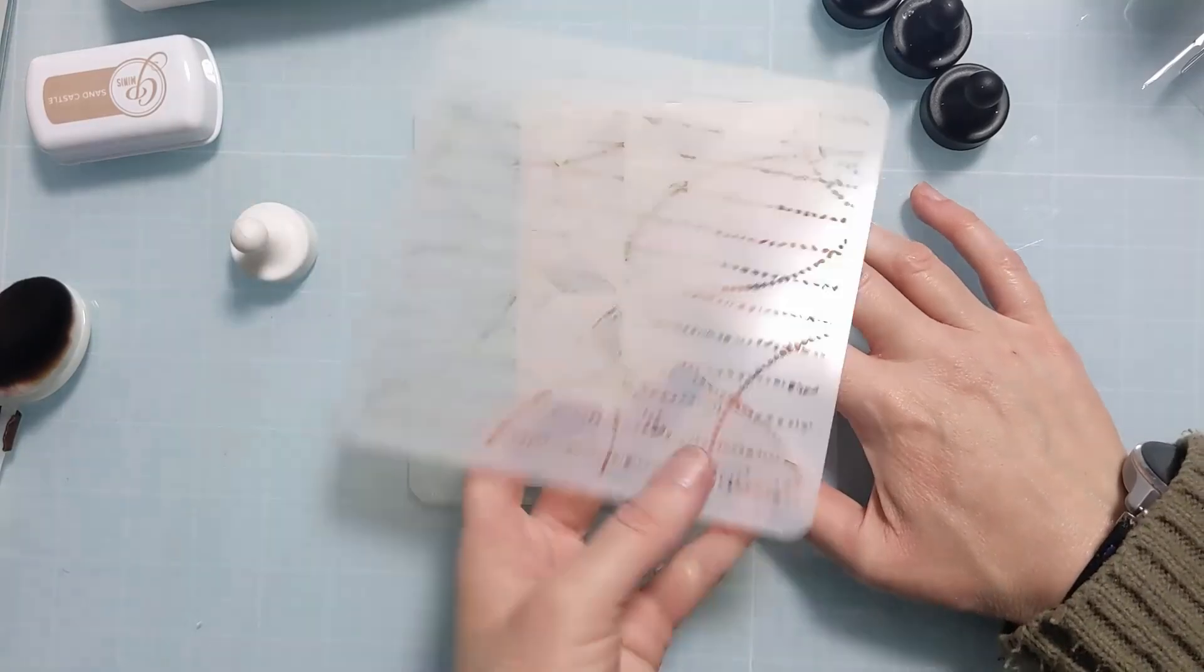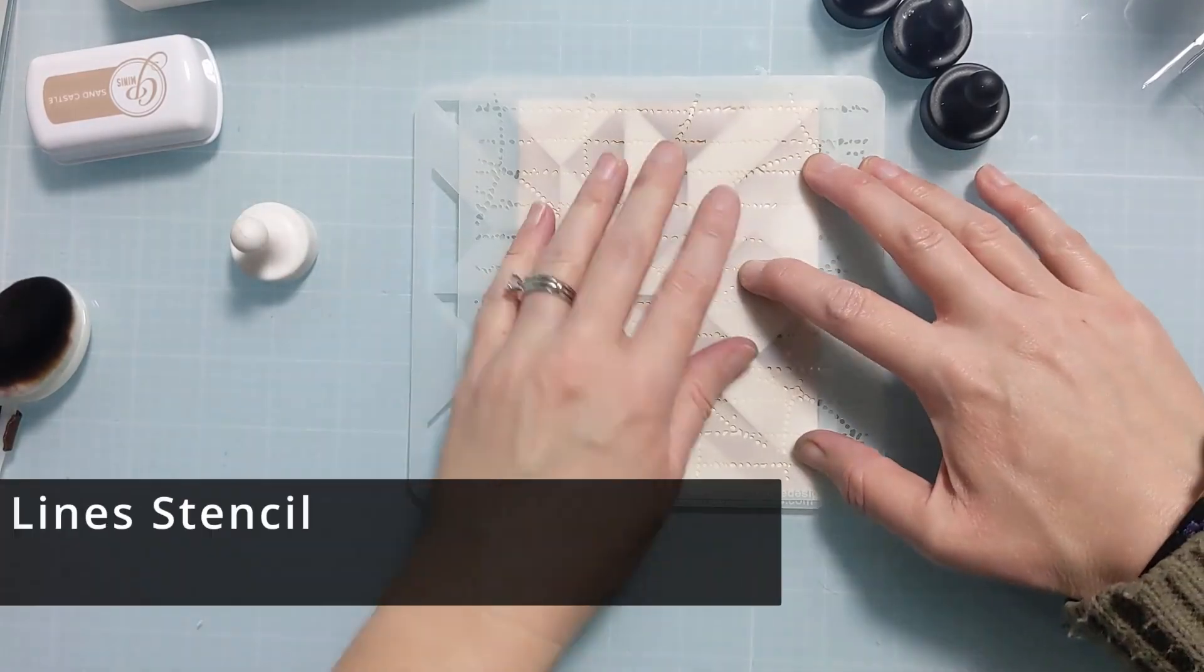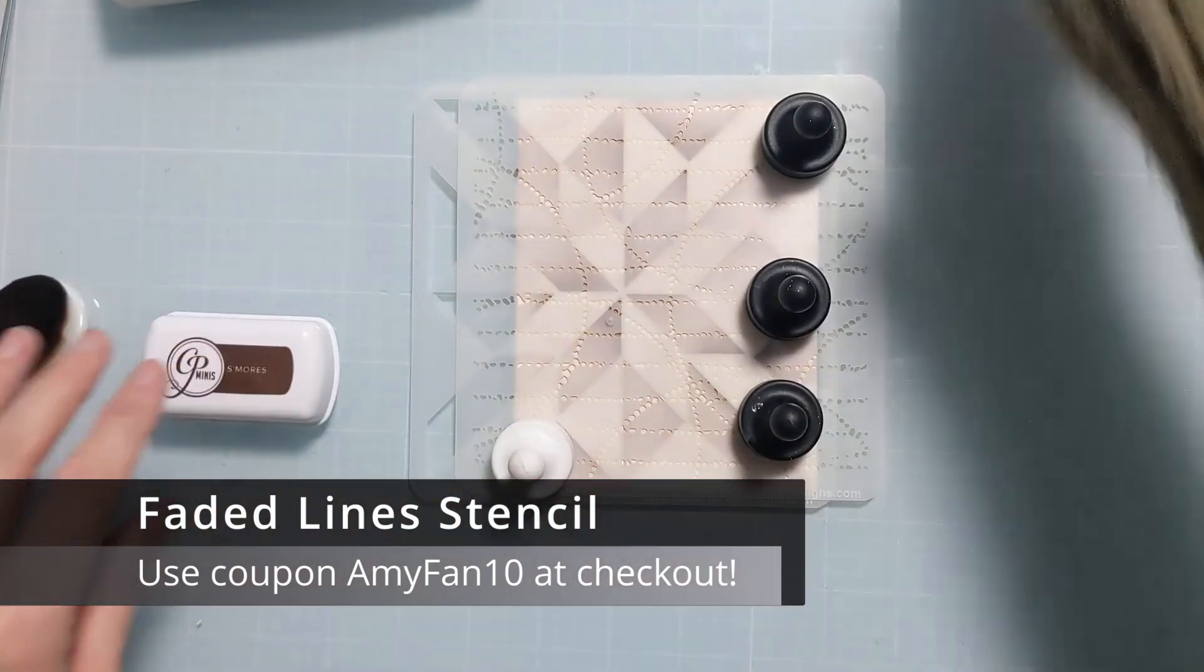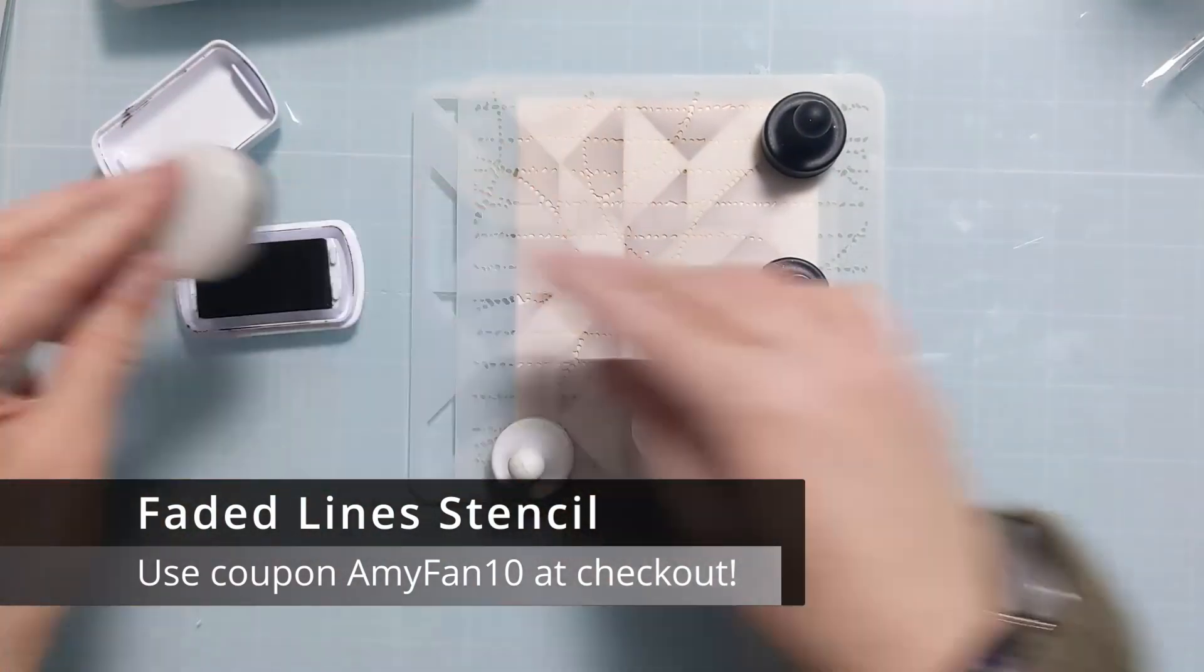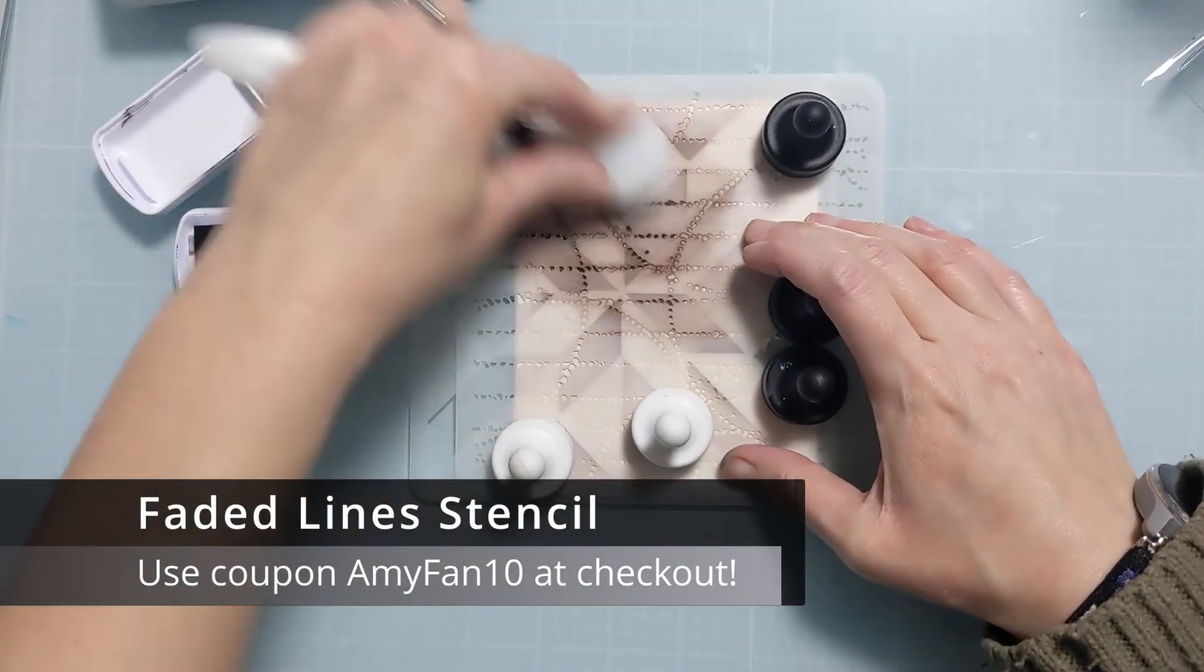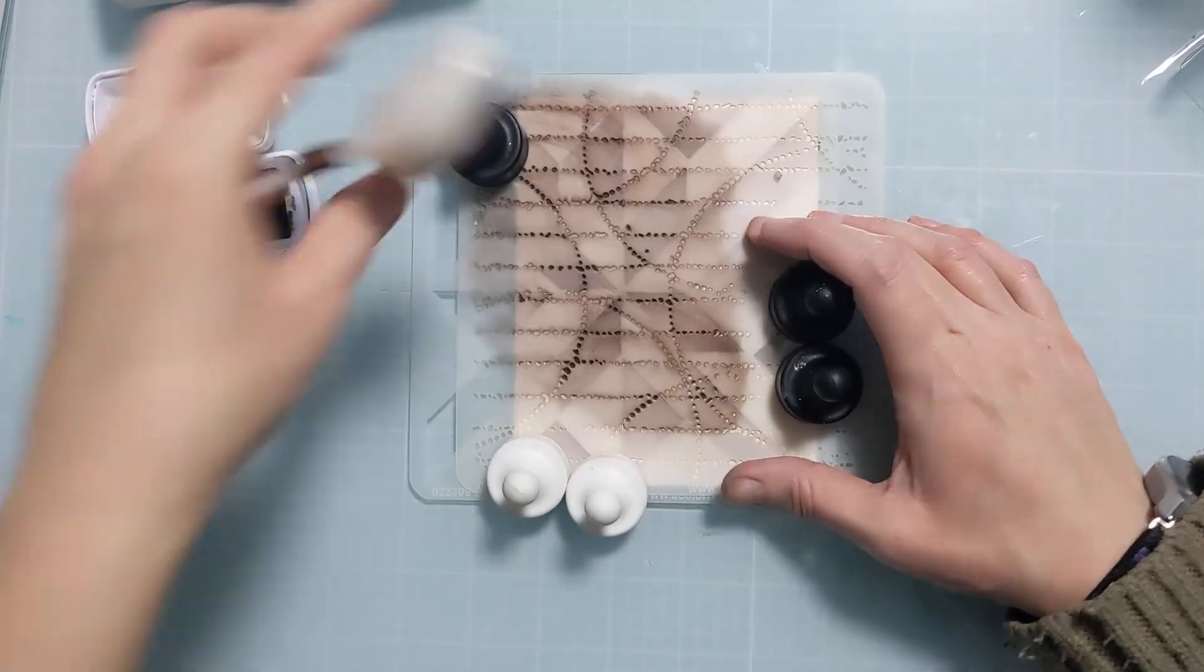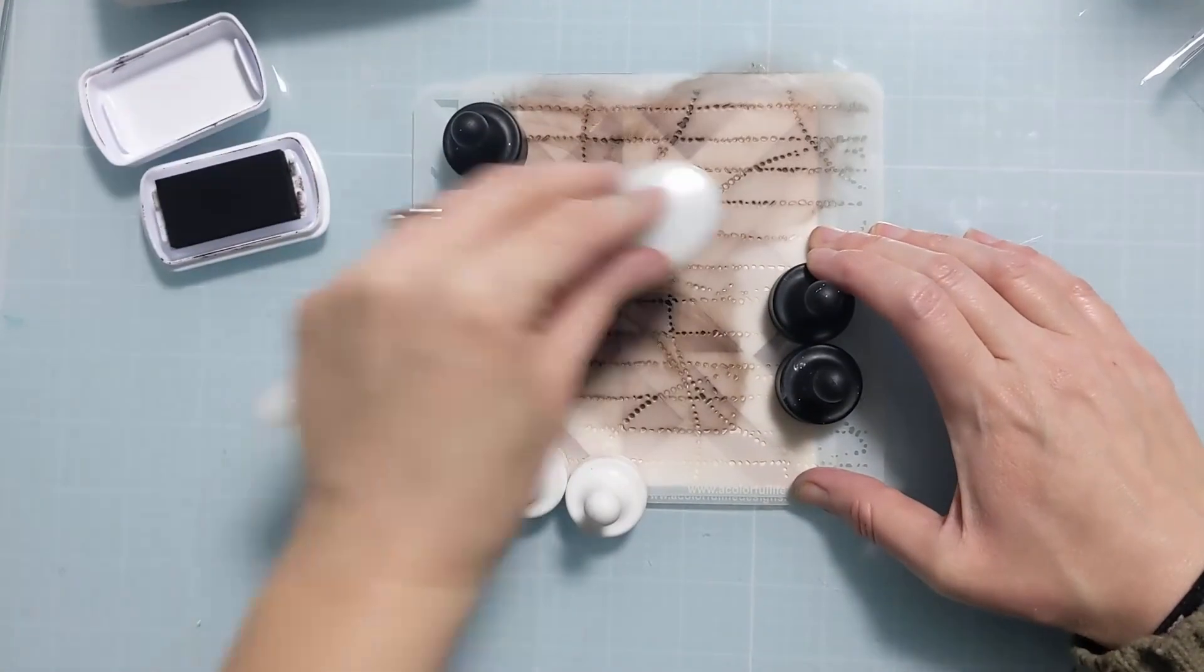Now without shifting this first stencil I'm going to layer up the second stencil. This will only go through the openings of the first stencil. So this is the Faded Lines Stencil. I'm going to come in with a really dark brown and it's only going to fill in the openings of that first stencil. It's going to be a really cool textured look that gets masked off.